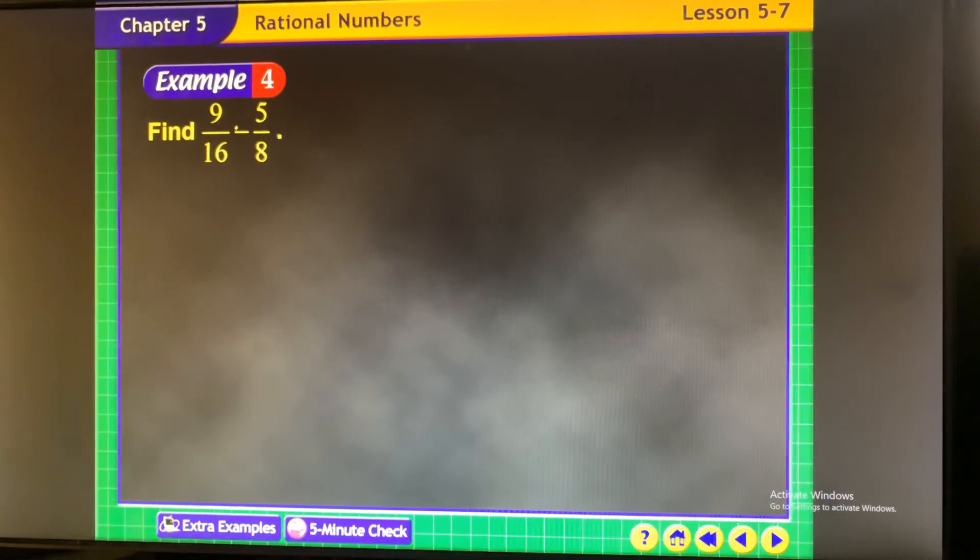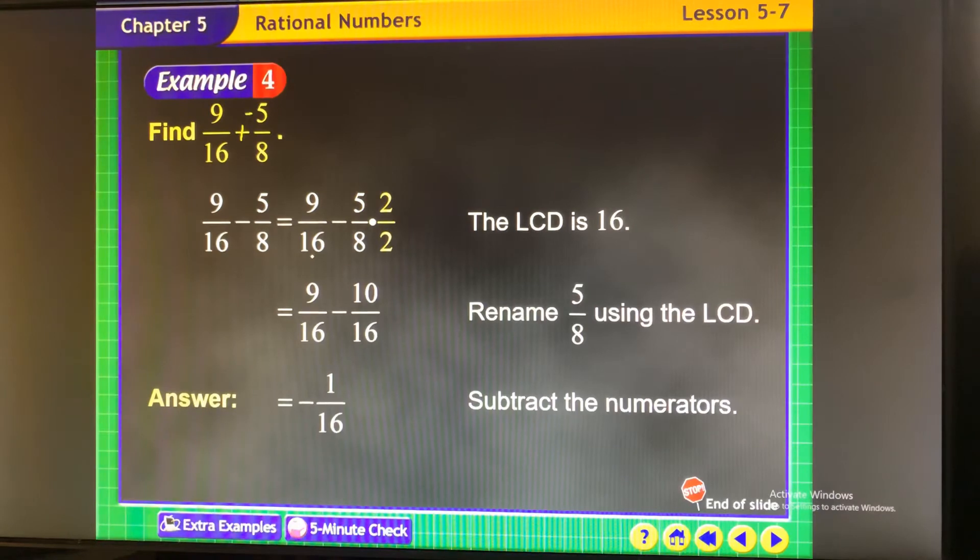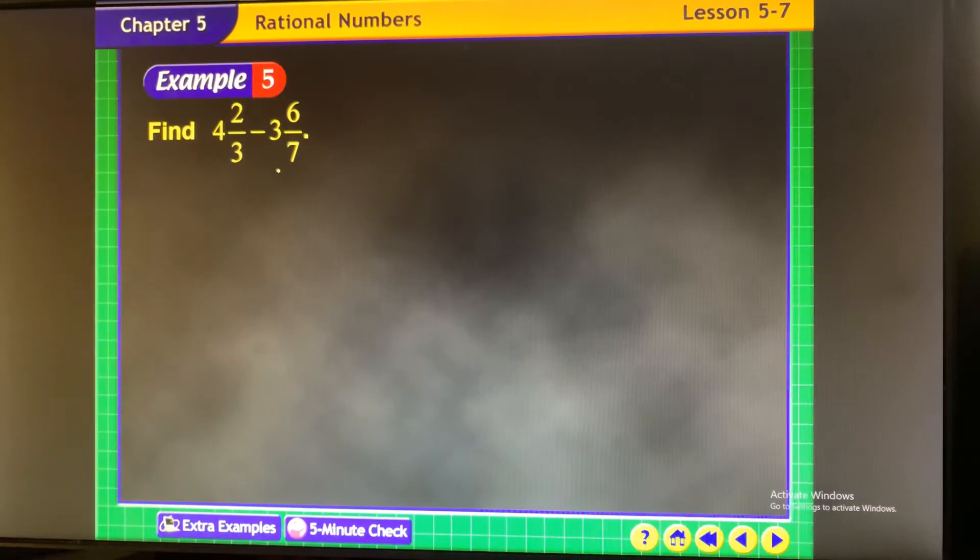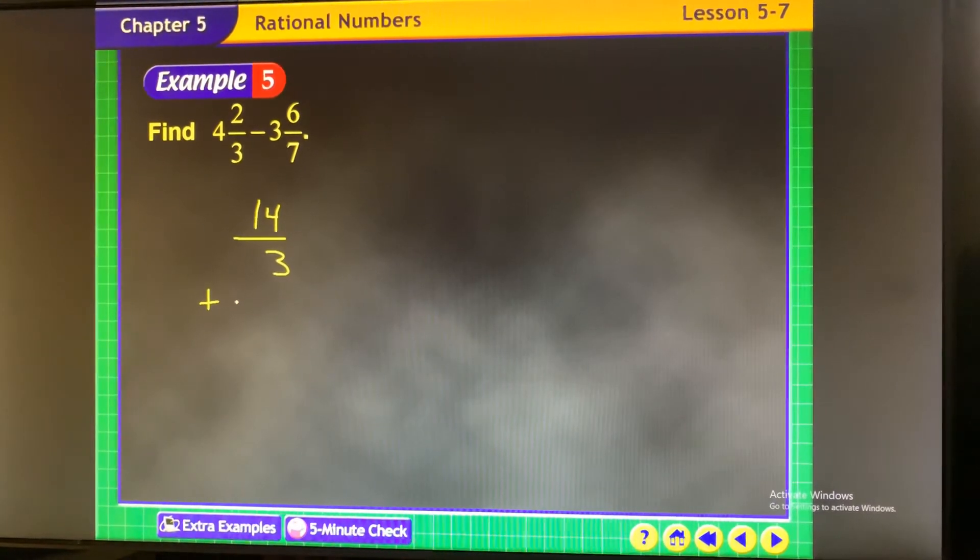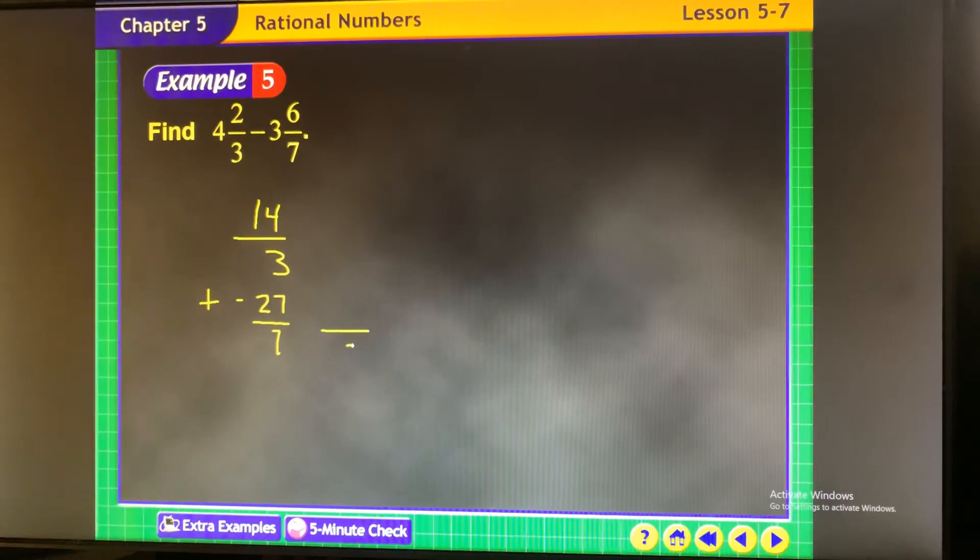Subtraction is no different. Just, you know, maybe do some add opposite. So you make sure you get things right. And you get negative 1 and 11 12ths minus 2 9ths. You should get 25 over 36. Don't use mixed numbers. Change them to improper. 14 thirds plus negative 27 7ths. Common denominator of 21.